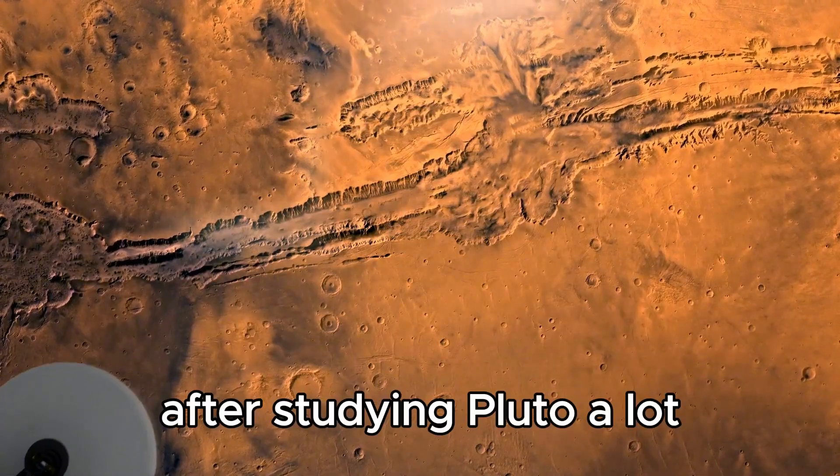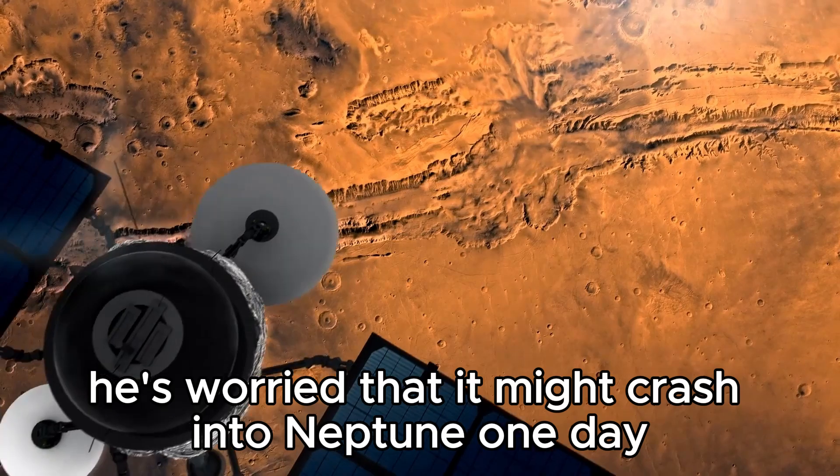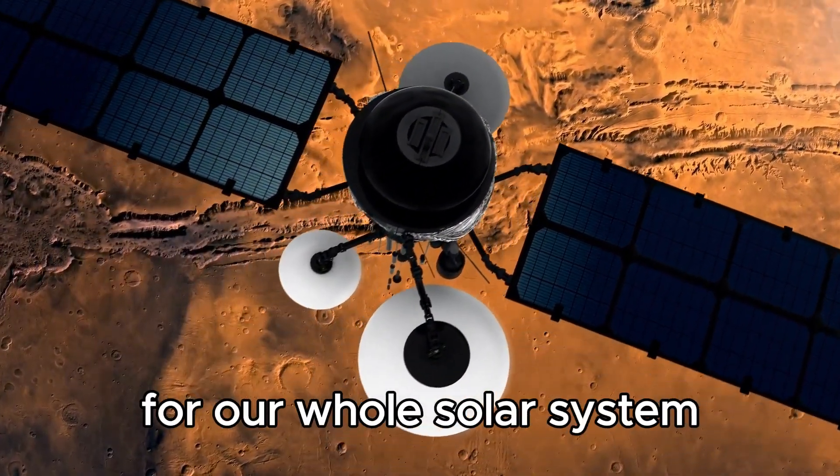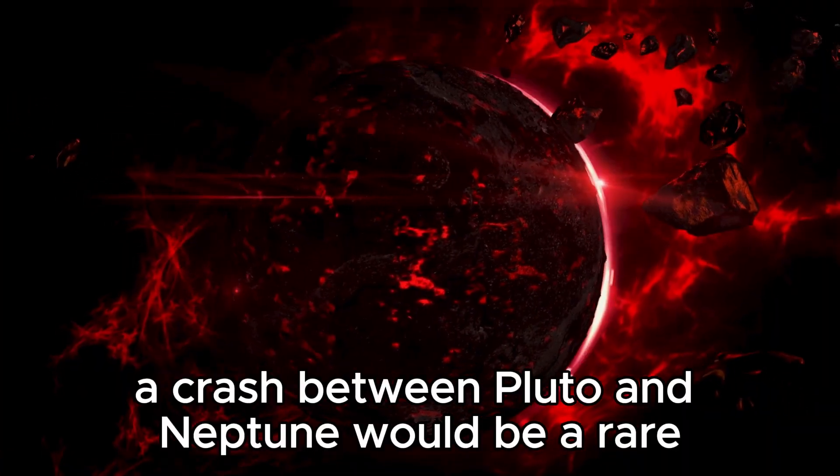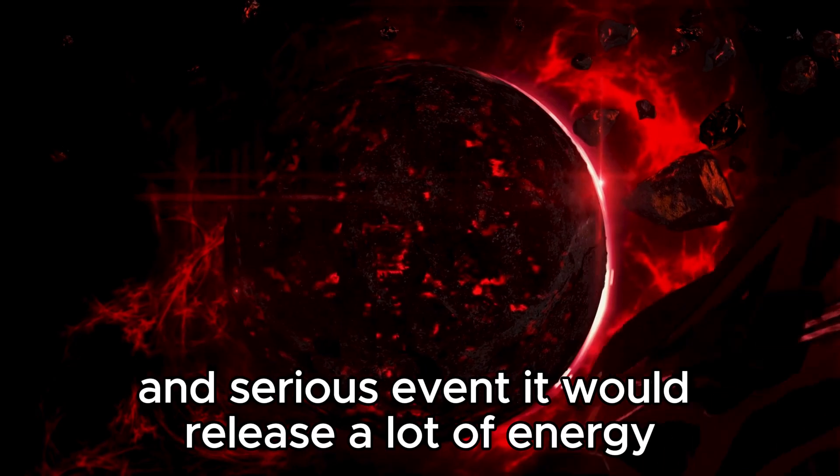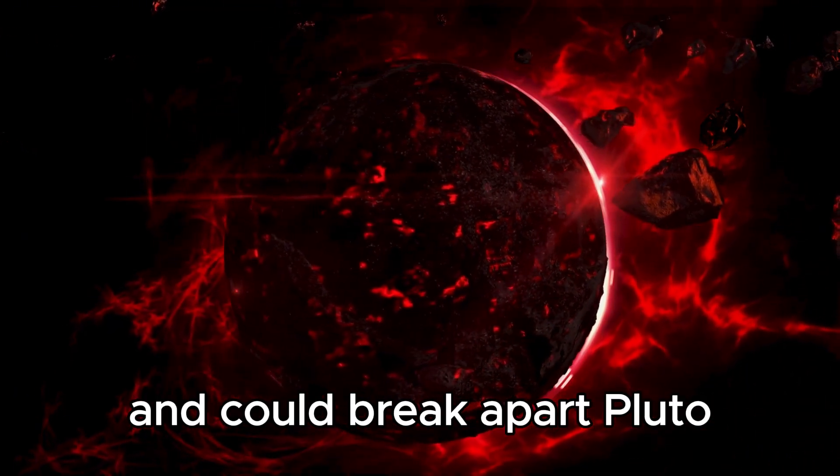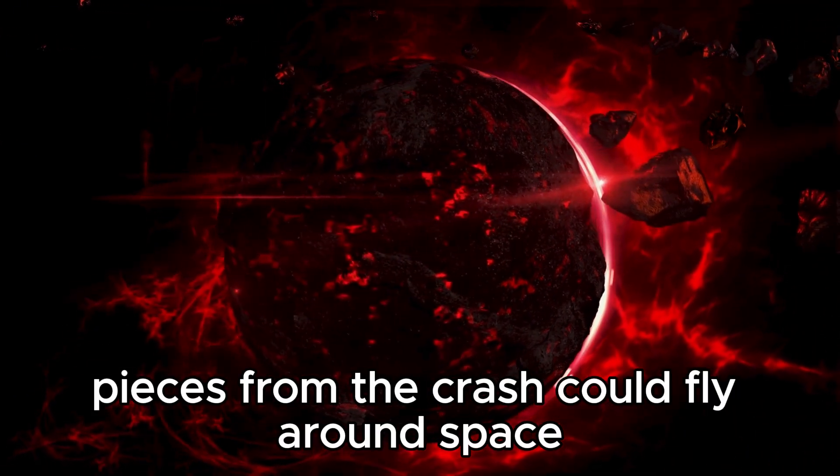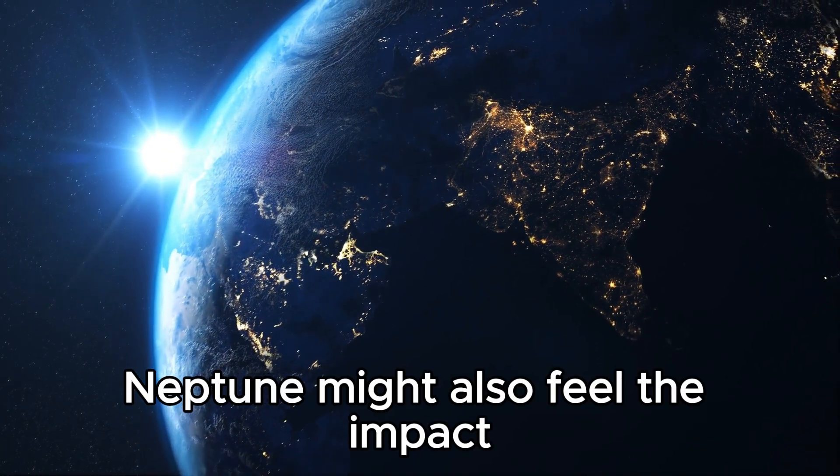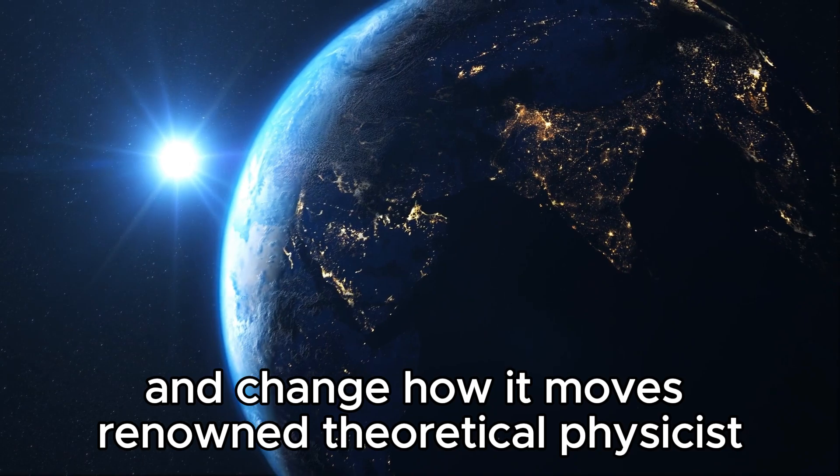Tyson works with other scientists to warn people about the possible dangers of Pluto's strange path. After studying Pluto a lot, he's worried that it might crash into Neptune one day. He says this could cause big problems for our whole solar system. A crash between Pluto and Neptune would be a rare and serious event. It would release a lot of energy and could break apart Pluto. Pieces from the crash could fly around space and hit other planets and moons. Neptune might also feel the impact and change how it moves.